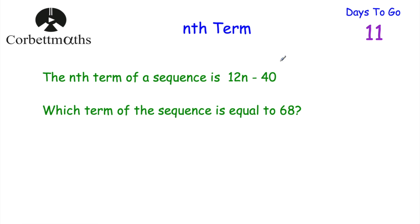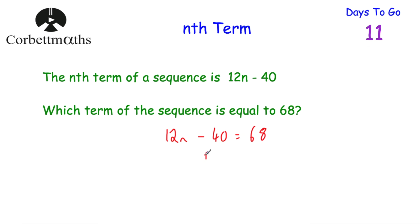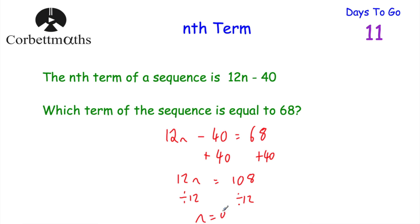Here's another one to try. We're told the nth term of the sequence is 12n minus 40, and we want to find which term equals 68. So we write 12n minus 40 equals 68. Add 40 to both sides: 12n equals 108. Divide by 12: n equals 9. So the 9th term of the sequence is equal to 68.